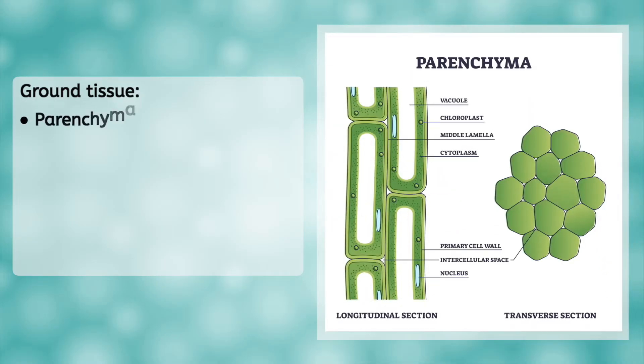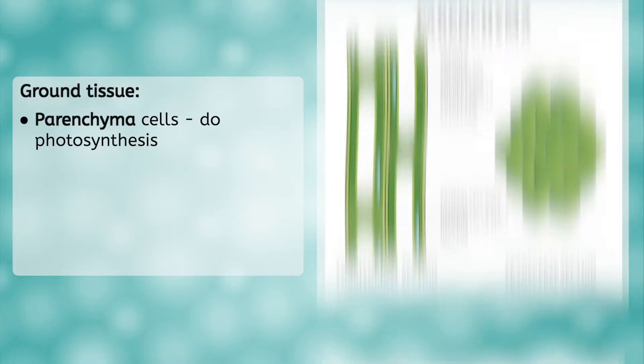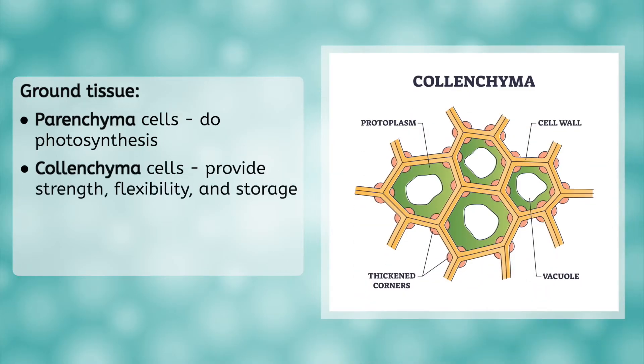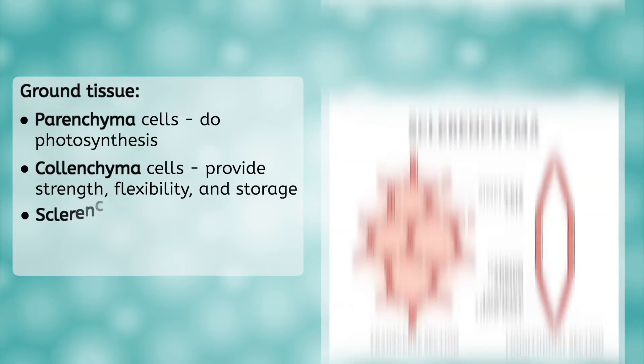It includes parenchyma cells that do photosynthesis and have chloroplasts. Collenchyma cells that provide strength and flexibility, as well as store nutrients. And sclerenchyma cells, which are usually dead, inactive cells, but which still provide a rigid layer of support for the trunk or stem.